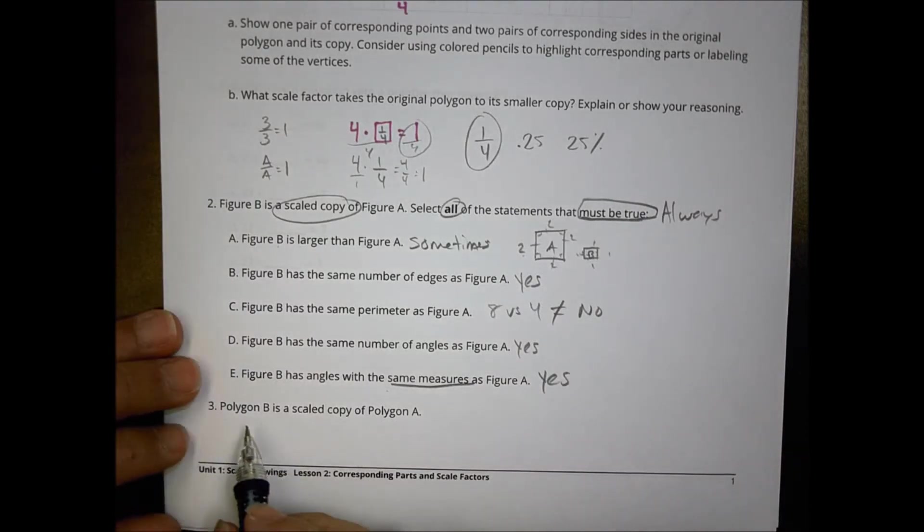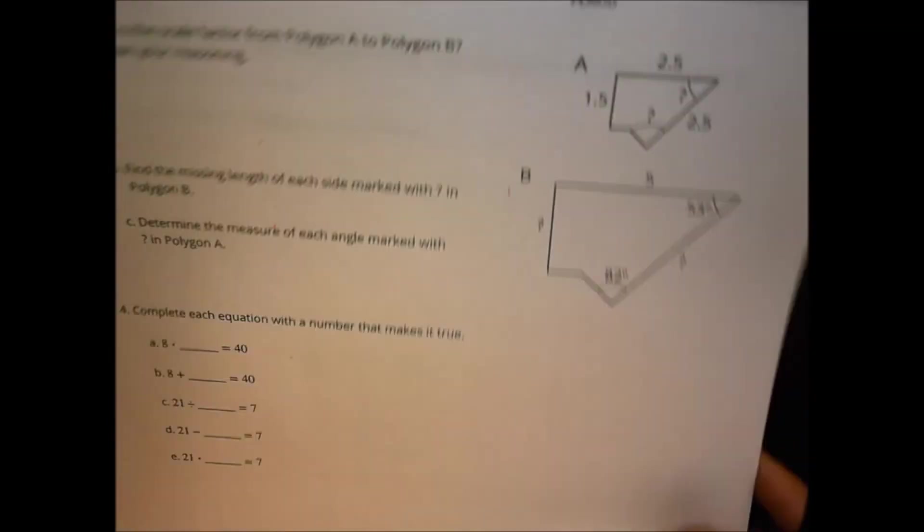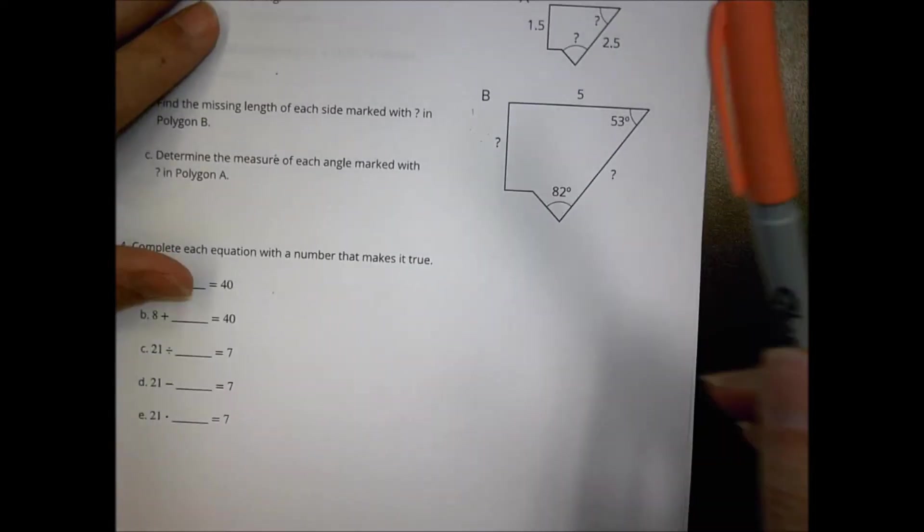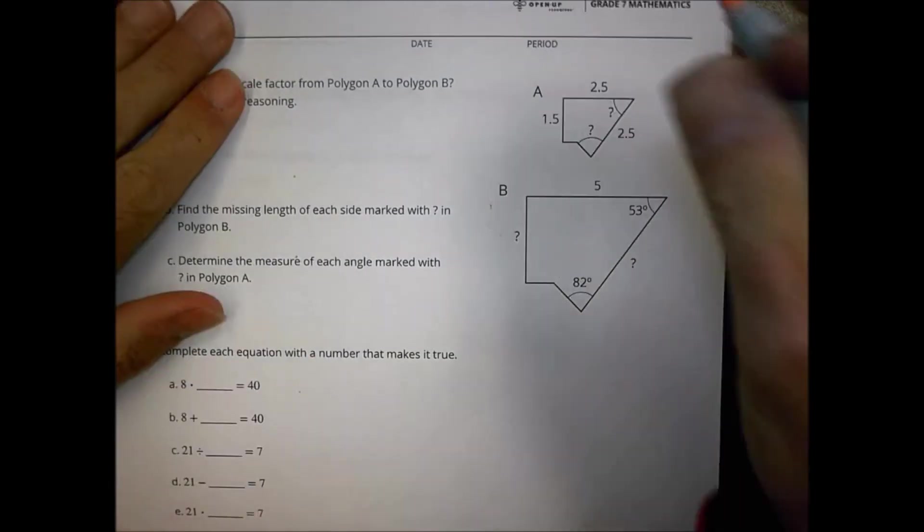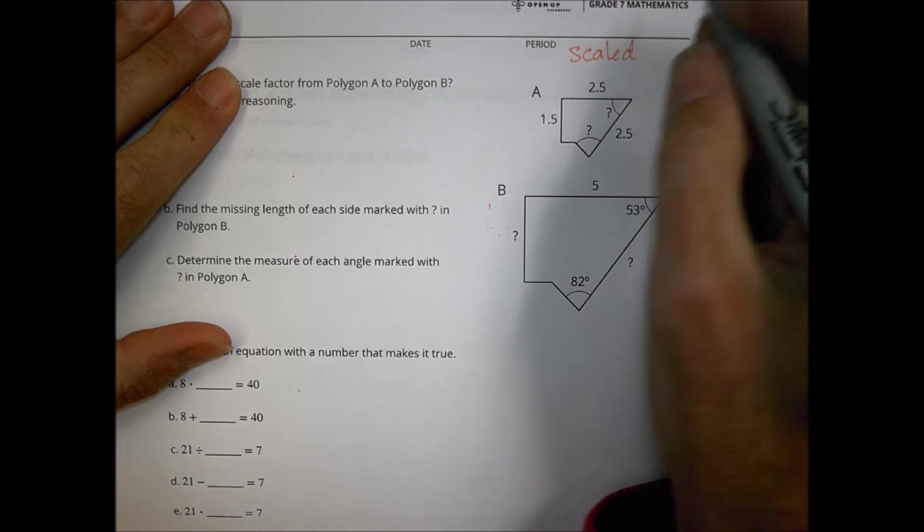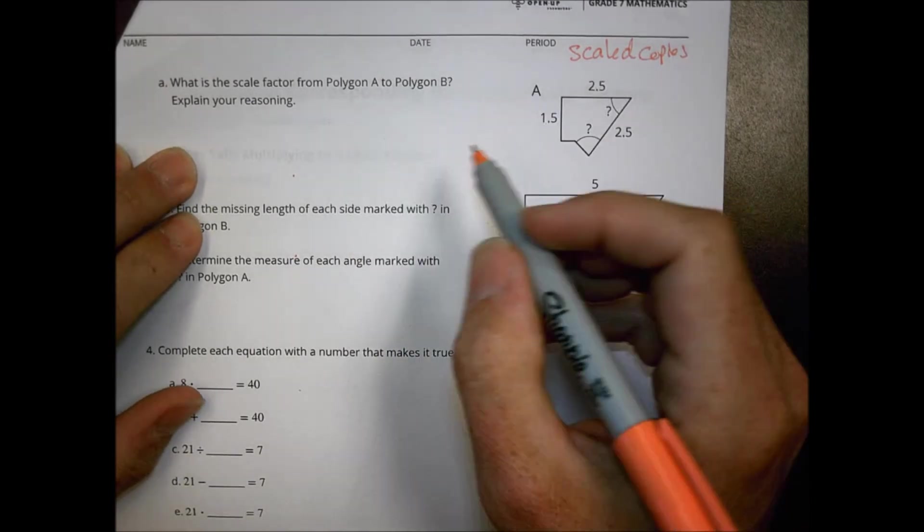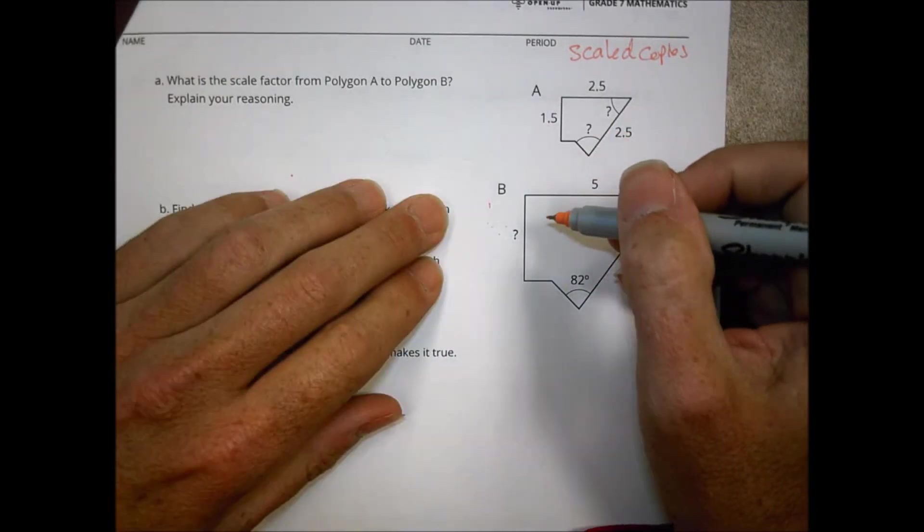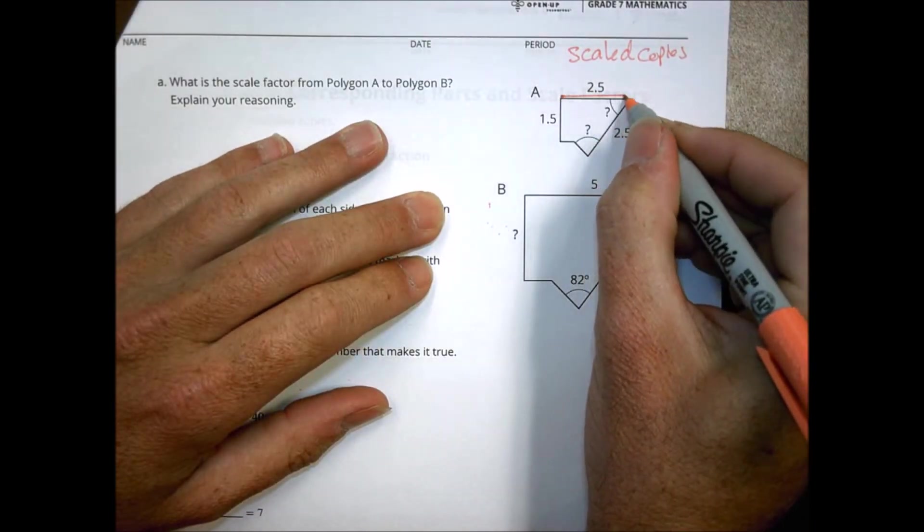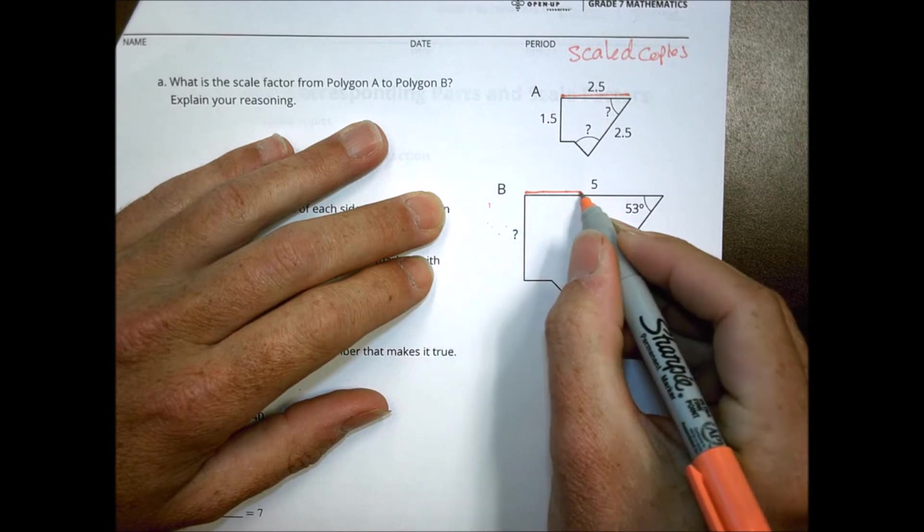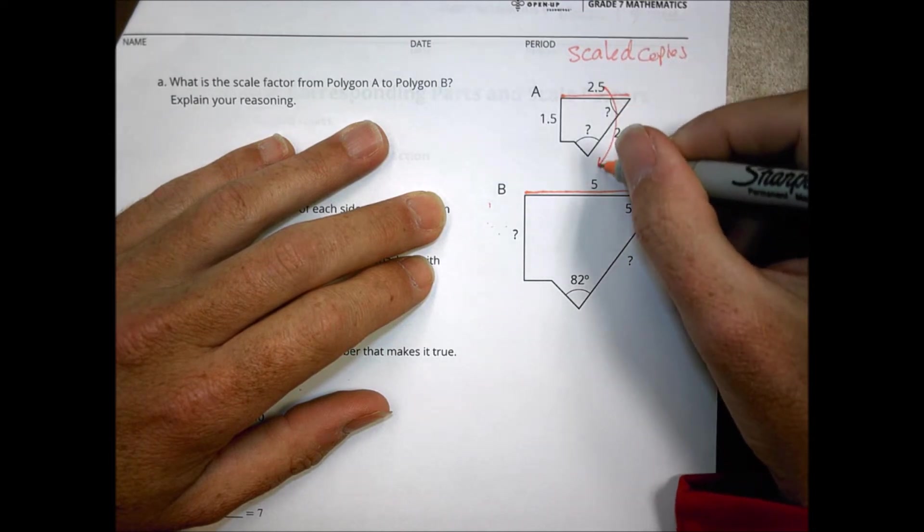Looking at number three. Three says polygon B is a scaled copy of polygon A. Let's take a look at those pictures here. So what they're telling us is that these two pictures A and B are scaled copies. So we don't have to worry about whether it is or isn't. They are scaled copies. So what is the scale factor from polygon A to polygon B? So to do this what we want to look at are some corresponding parts. Here for example this line is 2.5 and it corresponds to this one here which is five.